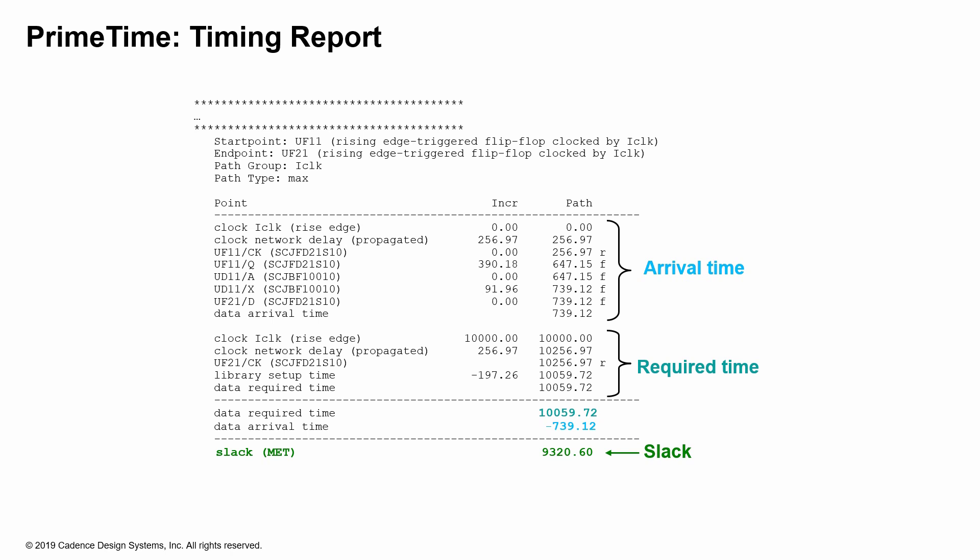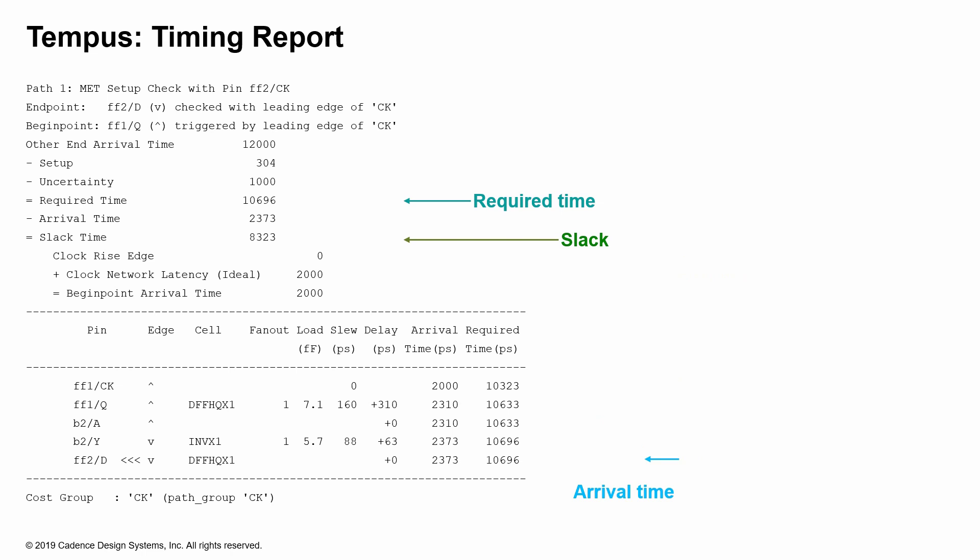In this report, notice what the start point and the end point are called. Also identify where the slack is, where the required time calculation is, and look for any clock uncertainties. Also look for where the arrival time calculation is shown, and look for the delay through each of the cells and how the timing arcs are represented.